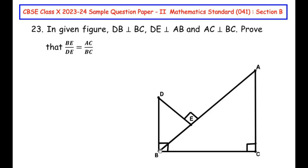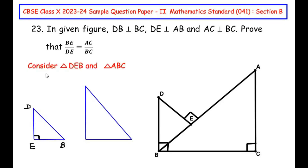Let us try to find a relationship between triangle DEB and the large triangle ABC. Consider triangle DEB and triangle ABC drawn separately. From the given figure, DE is perpendicular to BE, so angle E is 90 degrees — triangle DEB is right-angled at E. From the figure, angle C is also 90 degrees in triangle ABC, so both triangles have a right angle.